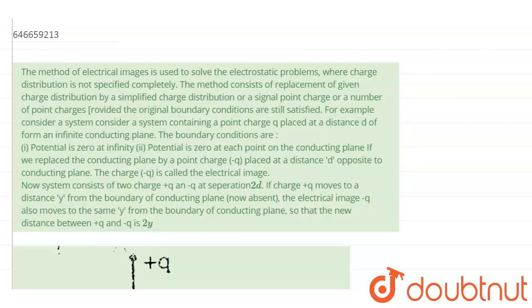Now the system consists of two charges, plus q and minus q, at separation 2d. If charge plus q moves to distance y from the boundary of conducting plane, electrical image minus q also moves to the same y from the boundary of conducting plane, so that the new distance between plus q and minus q is 2y. So what they